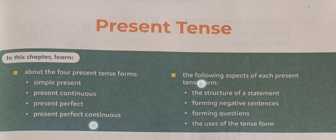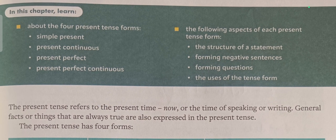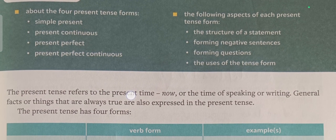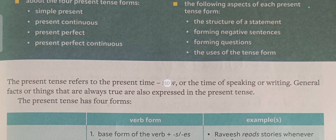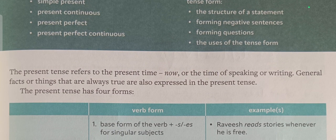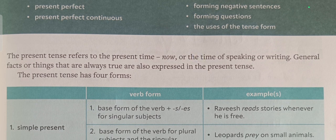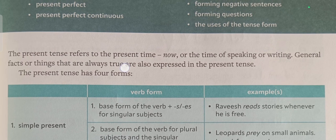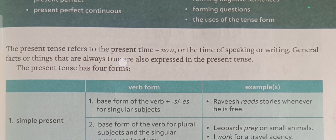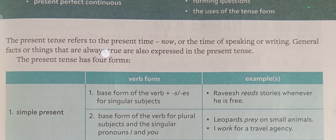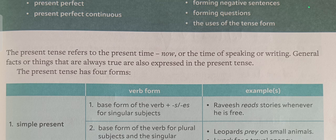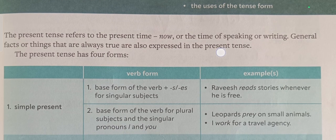So Present Tense — what do you mean by Present Tense? Present Tense refers to the present time, like now, or the time of speaking or writing. When we are talking or writing, it relates to your Present Tense. Generally, facts or things that are always true are also expressed in the Present Tense.